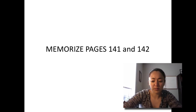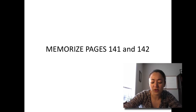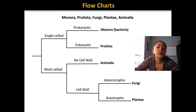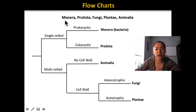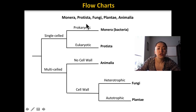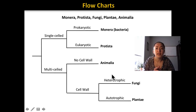So there are three main things you need to learn from those two pages. Let's look at objective one: to construct a flowchart to sort organisms into categories based on shared characteristics. Here I have listed the five different kingdoms you should know: Monera, Protista, Fungi, Plantae, and Animalia. Remember that Monera are bacteria. Here we have a flowchart using characteristics to categorize and separate these different kingdoms.